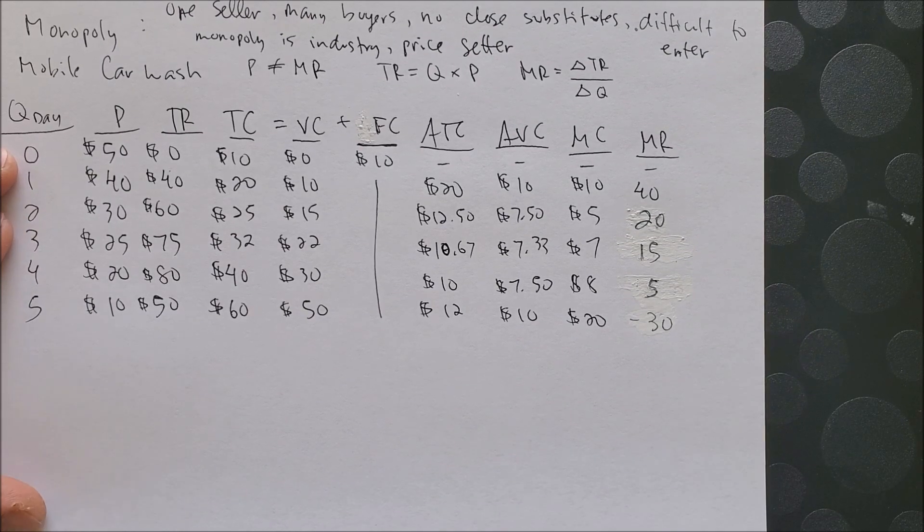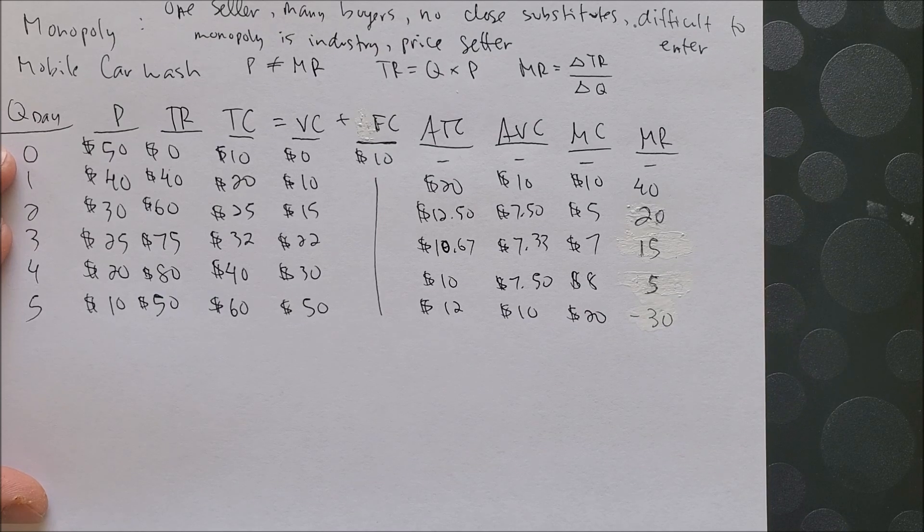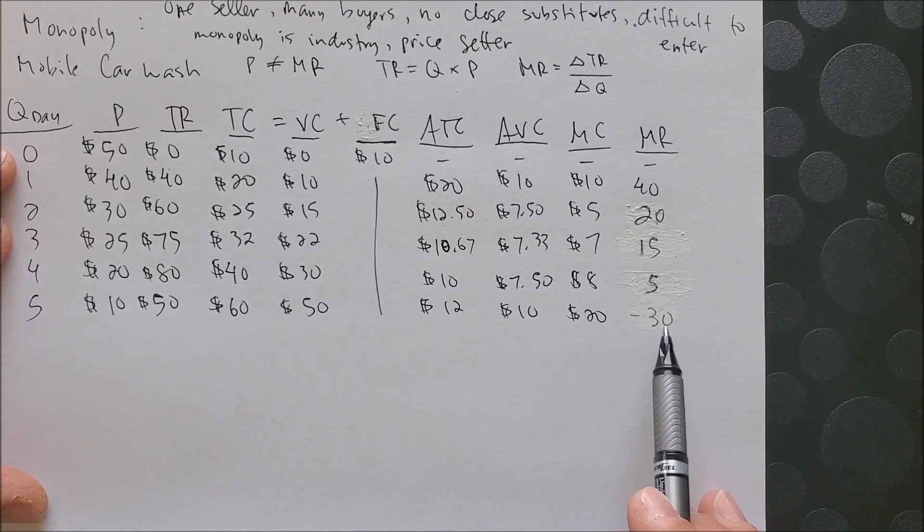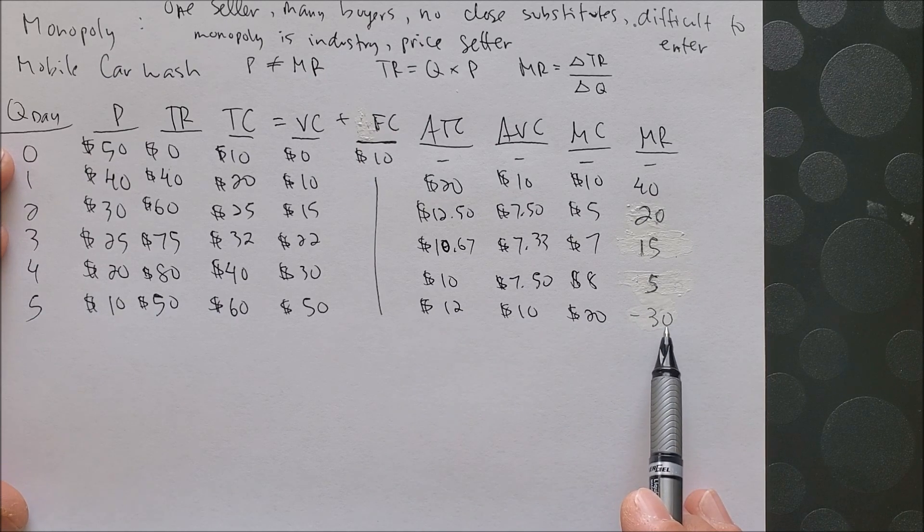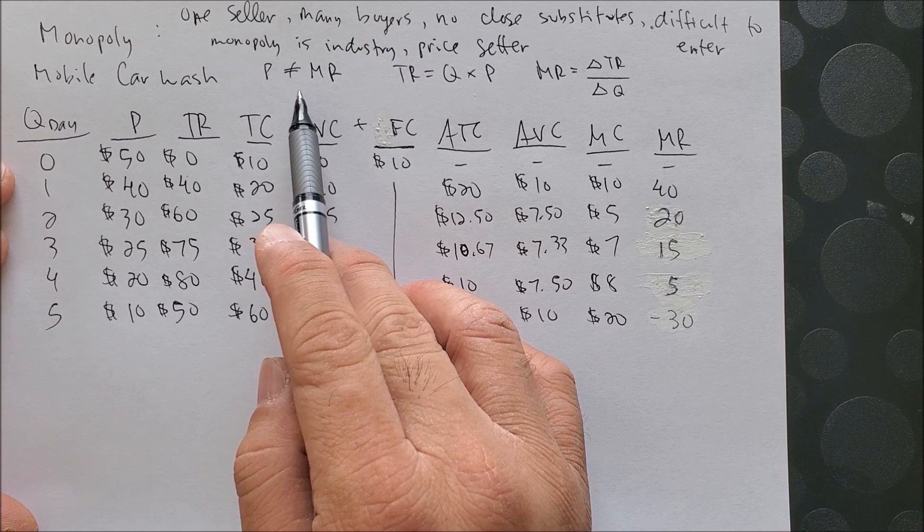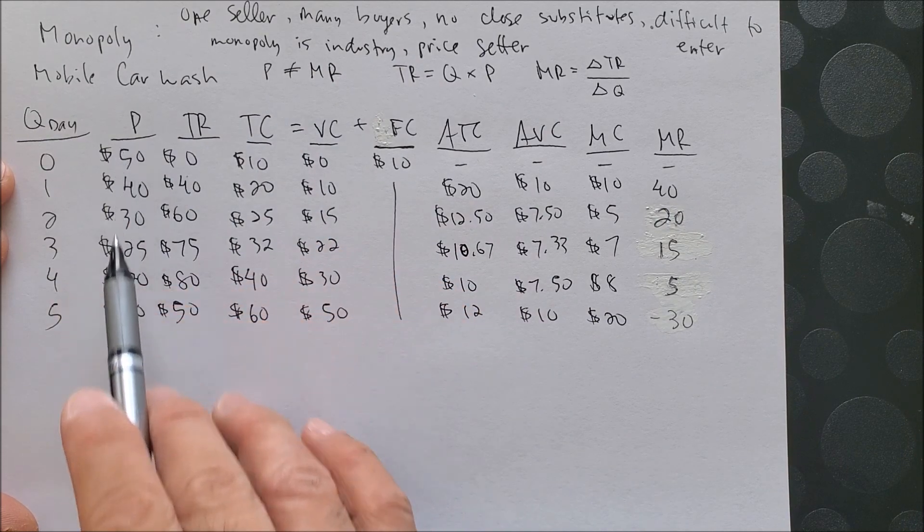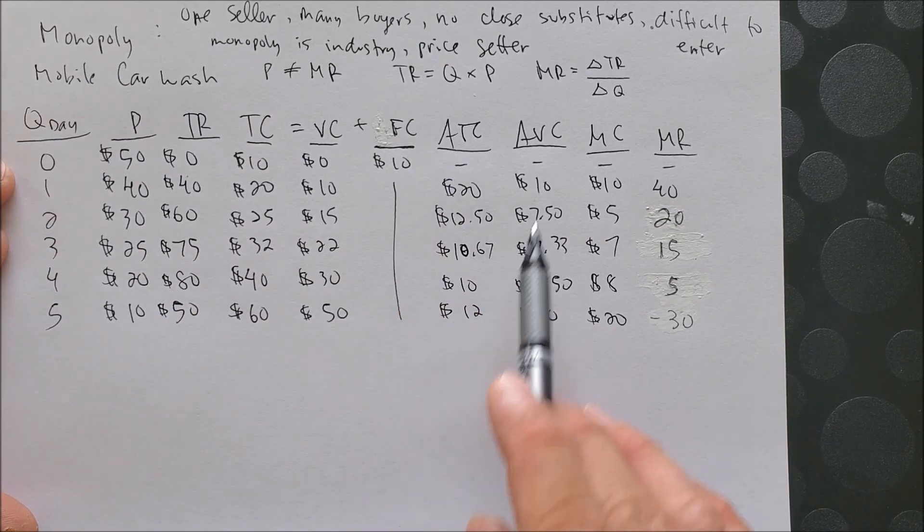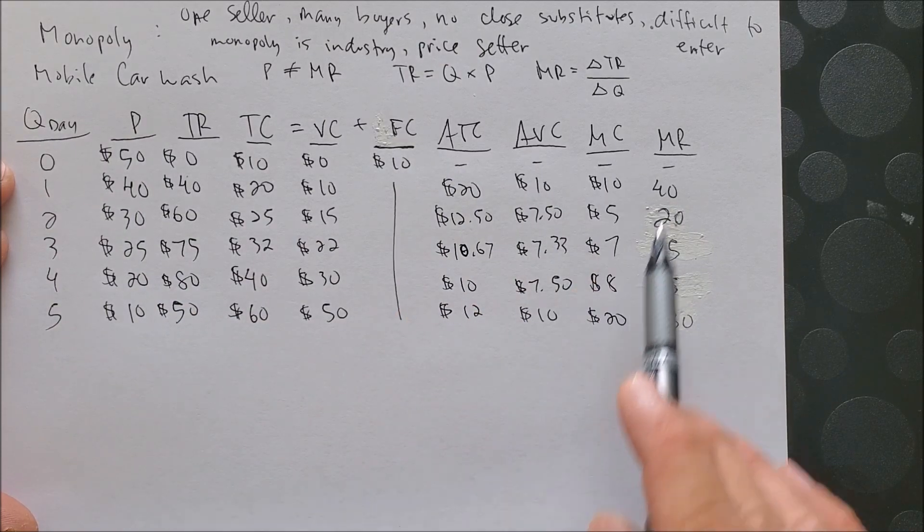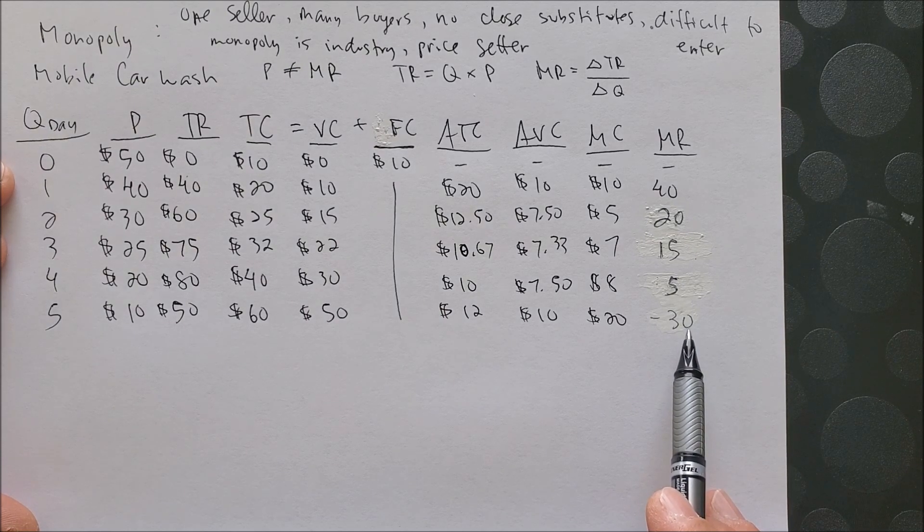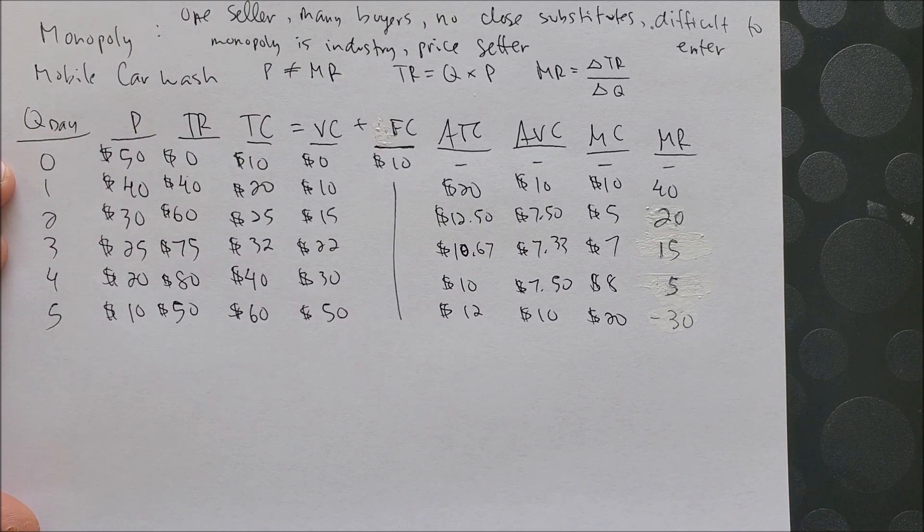So now that we have our MR, we can then graph the last four of the columns here. And remember that since price does not equal MR, we also need to graph price. So we will have a total of five columns: price, ATC, AVC, MC, and MR. I am again excluding AFC from the graph. And now we can go ahead and graph those columns.